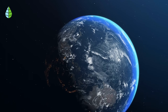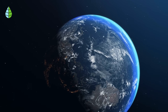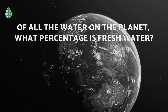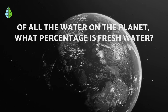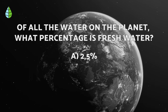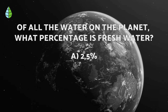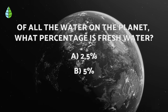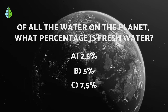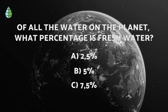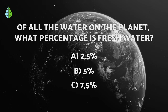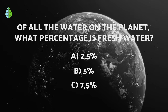Before we continue, let's put you to the test. Of all the water on the planet, what percentage is freshwater? A: 2.5%, B: 5%, or C: 7.5%? Think about it, because at the end of the video you'll find out if you're right.